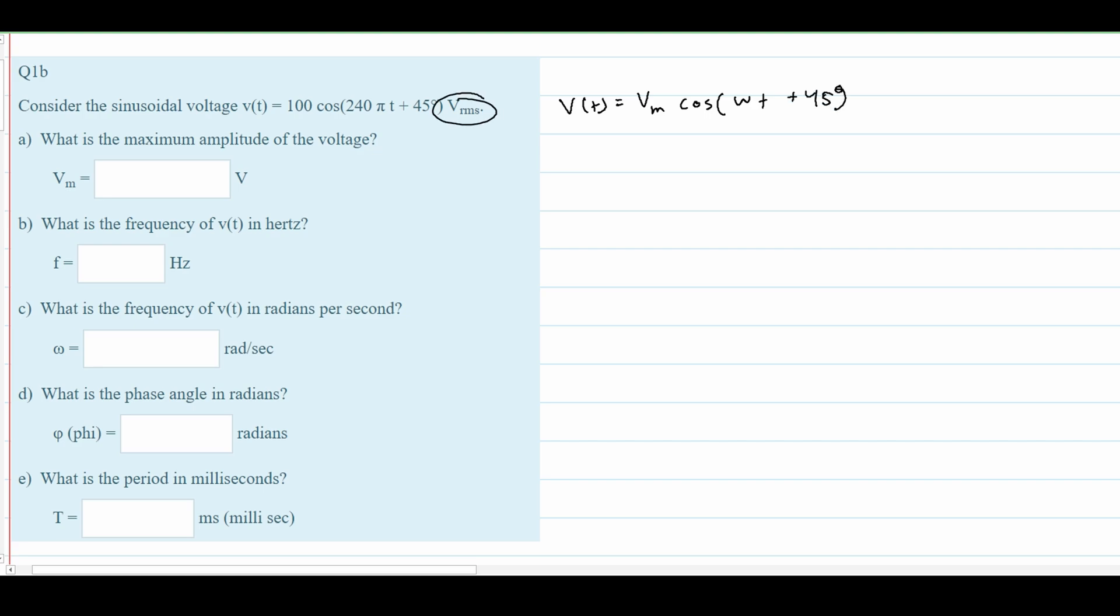With Vrms, only the first part changes because it is Vmax in one form while Vrms in the other. To convert from Vrms to V or vice versa, we use the equation Vrms = Vmax / √2.